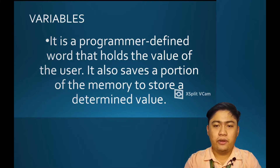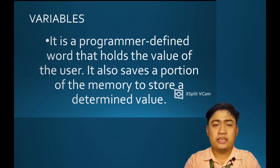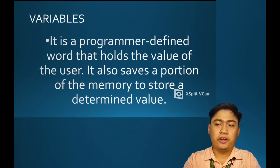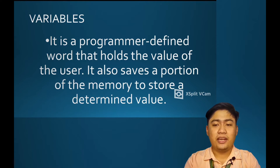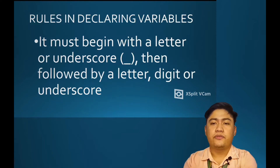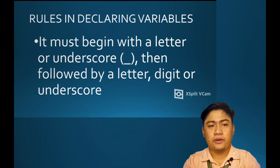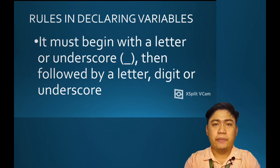A variable is a programmer-defined word that holds the value of the user. It also saves a portion of the memory to store a determined value. Since variables are programmer-defined words, there are rules to follow in declaring them. First, a variable must begin with a letter or underscore, then followed by a letter, digit, or underscore.